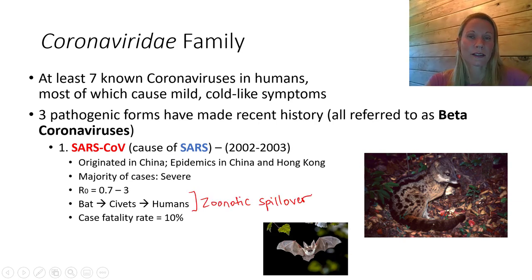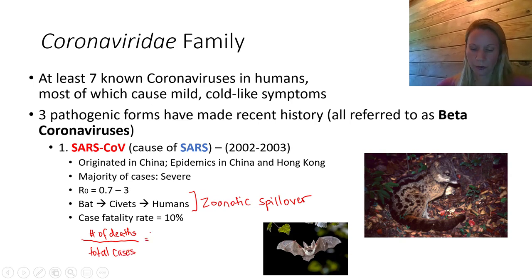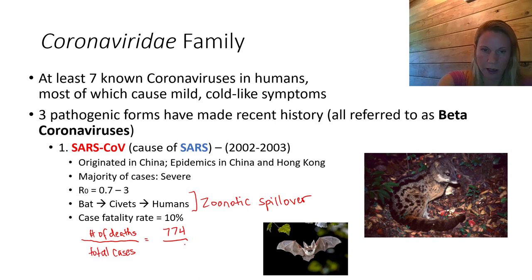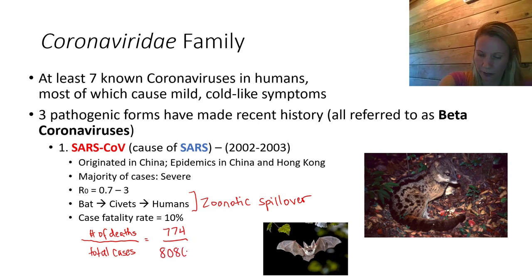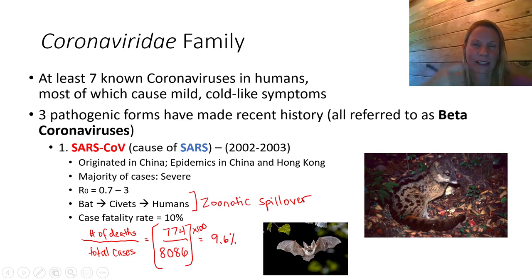In July of 2003, SARS basically went extinct. At that time, the case fatality rate was documented at around 10%. We calculate that by taking the number of deaths and dividing by the total cases. For SARS, the number of deaths were 774 and total cases were 8,086, giving us approximately 9.6% — or roughly a 10% fatality rate.